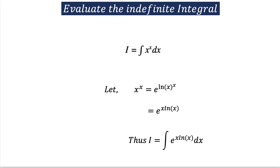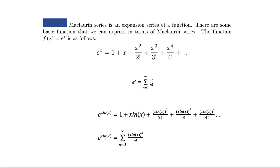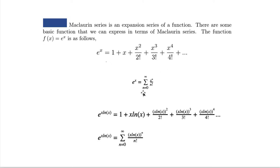Now we are trying to do more work. We already know the form of some functions in Maclaurin's series theory. For example, the familiar function e^x can be written as 1 plus x plus x squared over 2 factorial plus x cubed over 3 factorial plus x to the 4 over 4 factorial. This expanded form can be written as the sum from n equals 0 to infinity of x^n over n factorial.